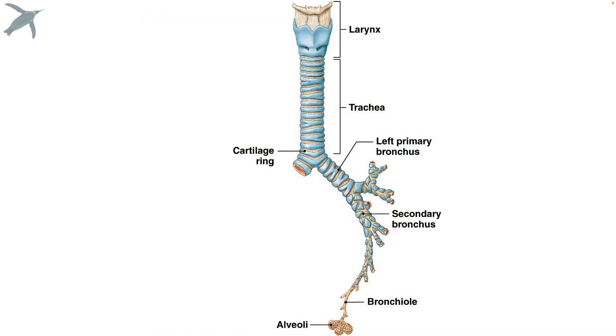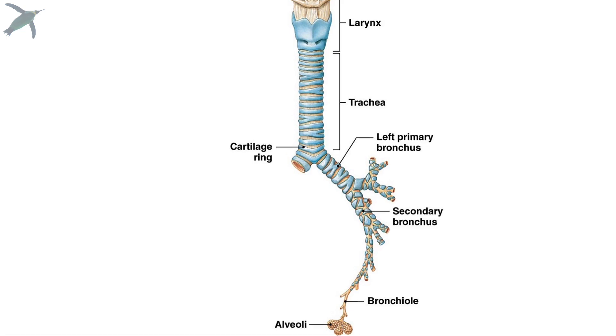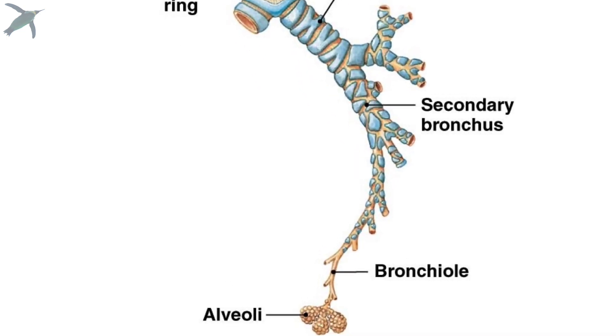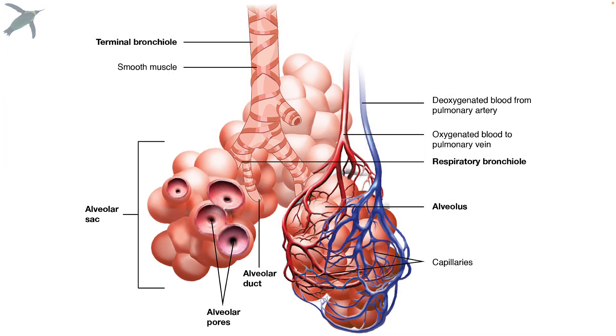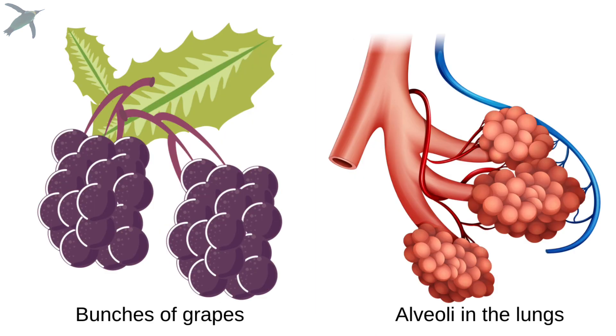A quick look back at the tubes: bronchioles finally end in the alveoli. These are blind sacs, and this is where gas exchange actually occurs.